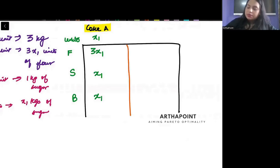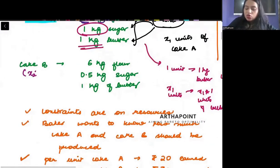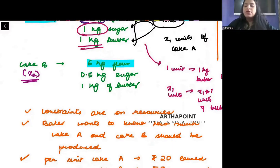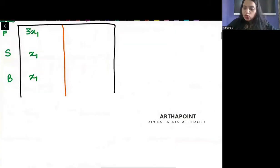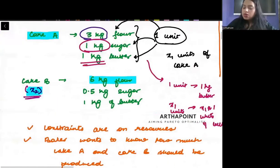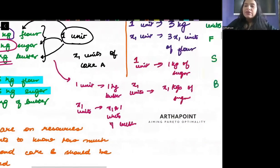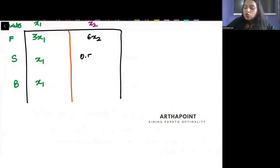Now I will talk about cake B. I am producing x2 units of cake B. To produce one unit of cake B, I require six kgs of flour, so to produce x2 units I will require 6x2 units of flour. To produce one unit of cake B, I require half a kg of sugar, so to produce x2 units I would require half times x2 units of sugar.